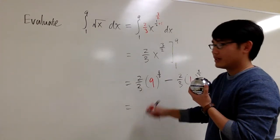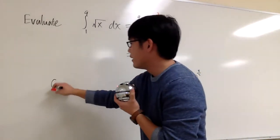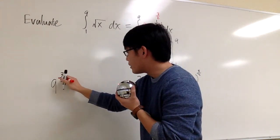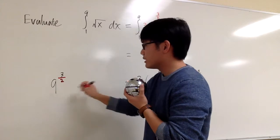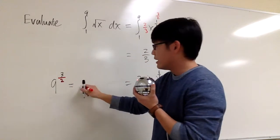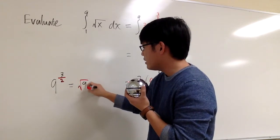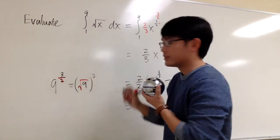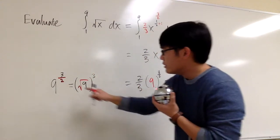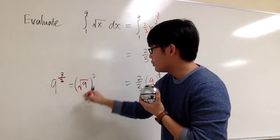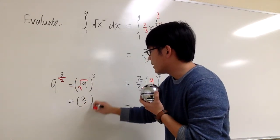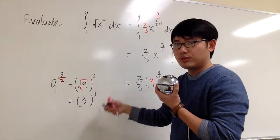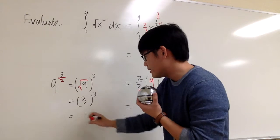Let's work out 9 raised to the 3/2 power. The 1/2 power turns it back to a square root, so you can look at this as the square root of 9 raised to the third power. The square root of 9 is 3, but we still have the third power on the outside. So 3 to the third power is not 9 — it's 27.